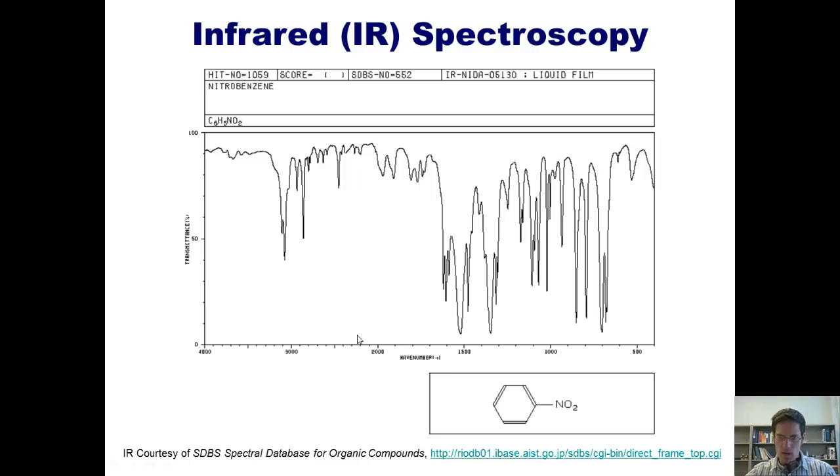Here is an IR containing a nitro-containing compound, nitrobenzene right here. You can see there are two vampire teeth coming down, one around 1600 and one around 1400. See vampire teeth? That's indicative of an NO2.